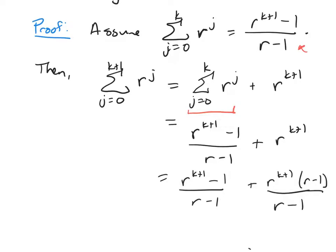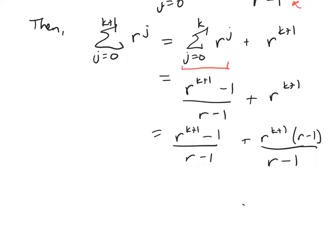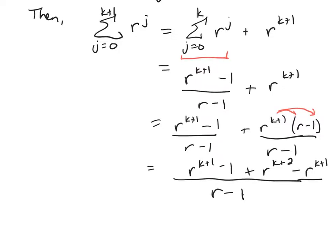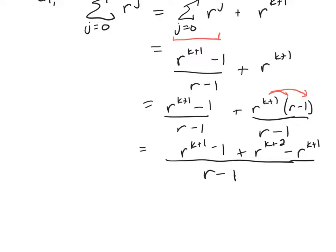So now that these have the same denominator, I can combine them into one term. And I'm going to distribute this one out. So it'll be r to the k plus 2 minus r plus r to the k plus 1 minus 1 over r minus 1. And if you look now, the ones that have k plus 1s in them, they have opposite signs, so they cancel.